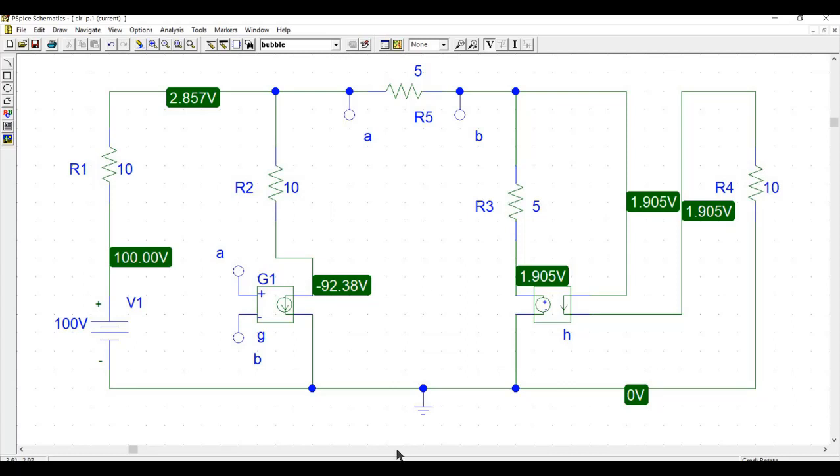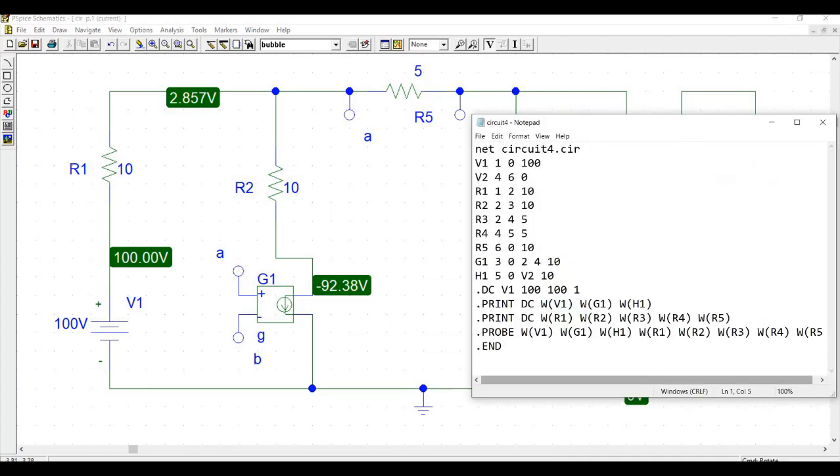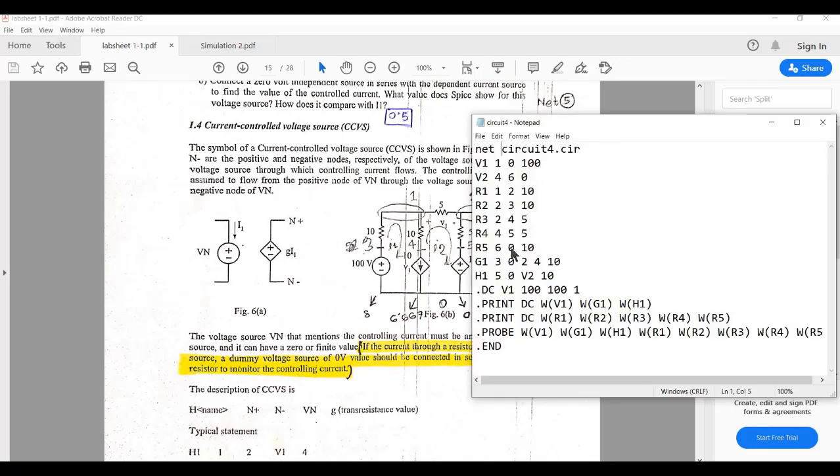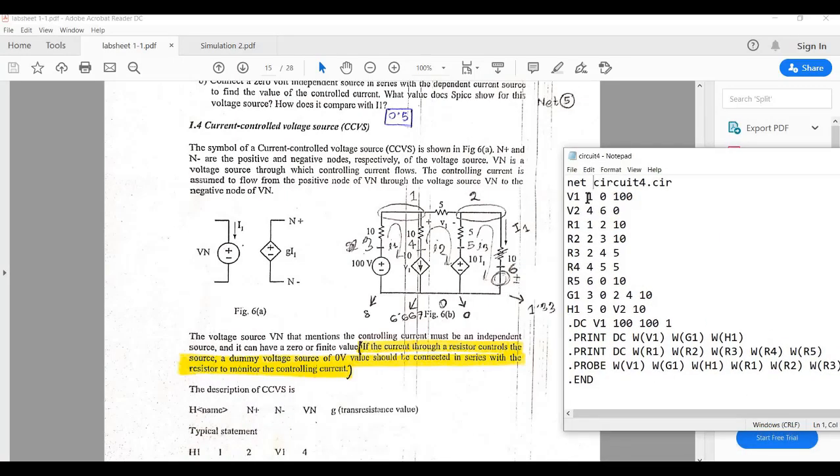But we will use netlist to verify our results. So here you can see that I have written a netlist over here. So let me open the original circuit. Okay, so this is our netlist. So you can see that V1 is between 1 and 0 and a 100 value.